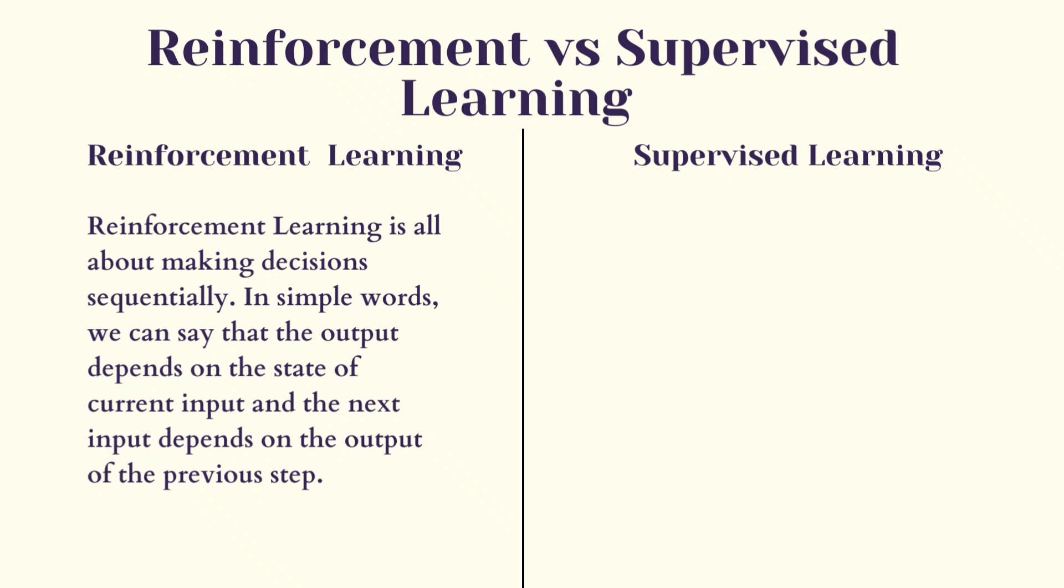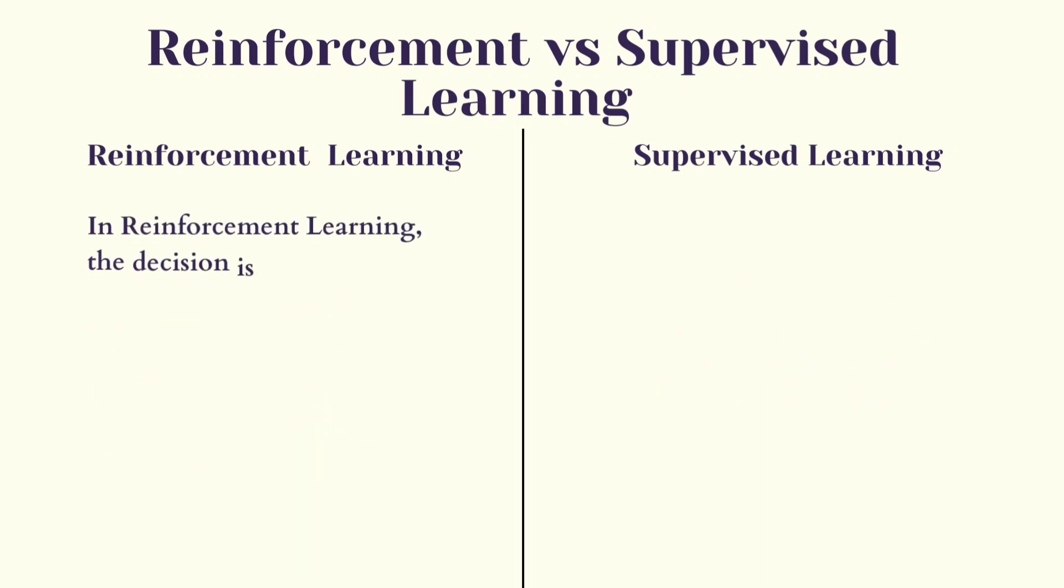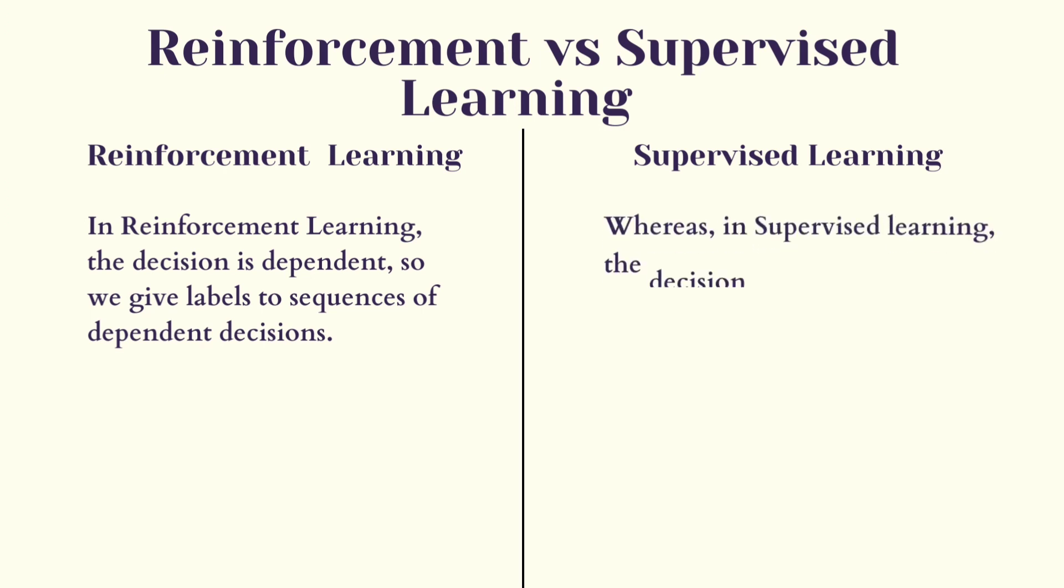Whereas in supervised learning, the decision is based on the initial input or the input given at the start. In reinforcement learning, the decisions are dependent, so we give labels to sequences of dependent decisions, whereas in supervised learning the decisions are independent of each other.